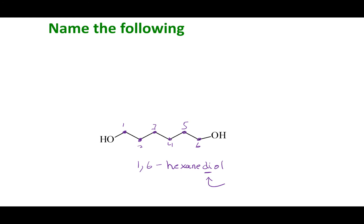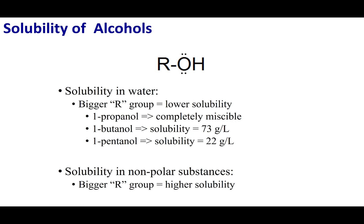If we have more than one functional group, we use di- or tri- prefixes and specify where each one resides. Chapter 21 is displaced from Chapter 17, so your book reminds you about solubility: the R group is nonpolar and the OH group is polar. The bigger the R group, the more nonpolar the molecule becomes. Like dissolves like — a larger R group means better solubility in nonpolar solvents but less solubility in polar solvents like water.